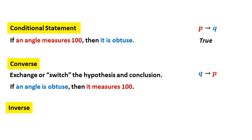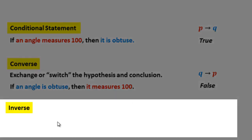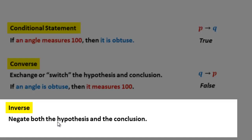Let's look at the truth value of the converse. If an angle is obtuse, then it measures 100°. Can you think of a counterexample? How about if it measures 101°? If it's 101° or 102° or 103°, it would still be obtuse. This statement is basically saying that every obtuse angle measures exactly 100°, which is not the case. So the converse is false.